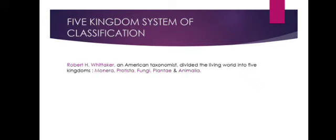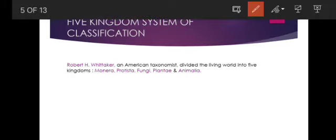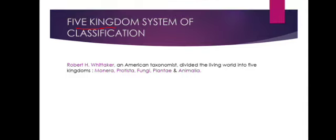Finally, the five kingdom system of classification was proposed by Robert H. Whittaker, an American taxonomist, who divided the living world into five kingdoms: Monera, Protista, Fungi, Plantae, and Animalia. He included a separate kingdom for fungi, and this five kingdom system of classification is what we currently use. We will now learn this system in depth.